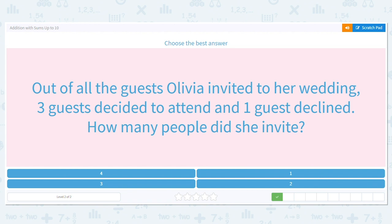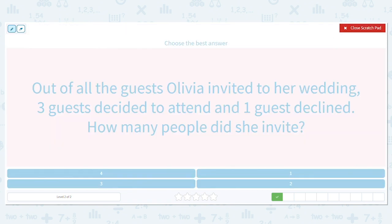Okay, so how many people said they were coming? How many are attending? She has three coming. How many said no? How many declined? One. What are our key words in the question? How many people did she invite? That tells you you add. How many means add.